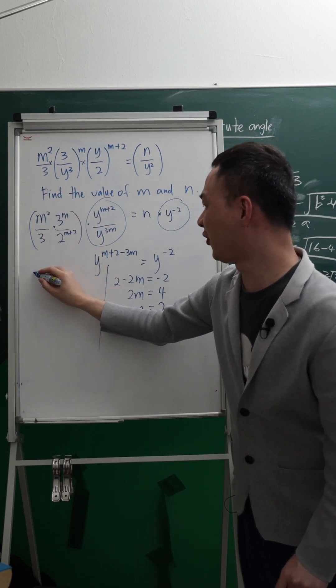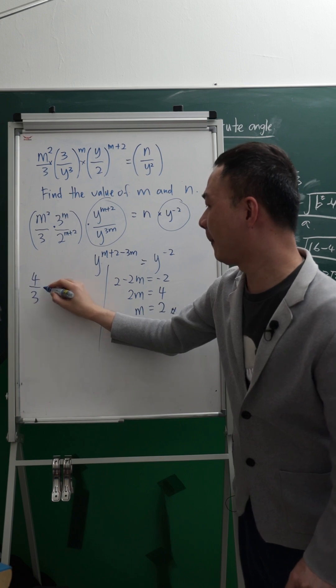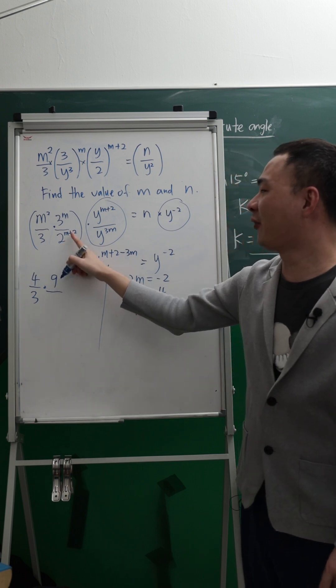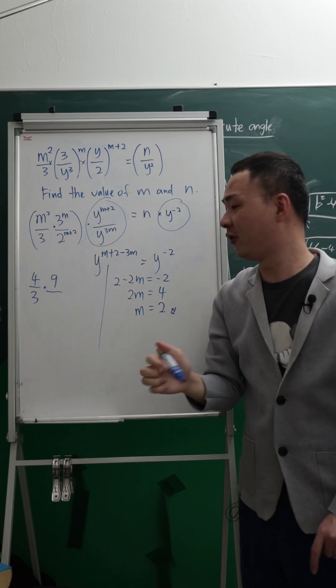So this is 2 power of 2, which is 4, over 3, multiply 3 power of 2, which is 9, times 2 power of 2 plus 2, which is 2 power of 4, which is 16.